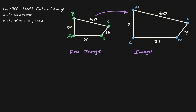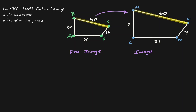Because of the orientation of these polygons, we can start matching sides. We can see that BA is proportional to ML, AD is proportional to LO, CD is proportional to NO, and BC is proportional to MN.